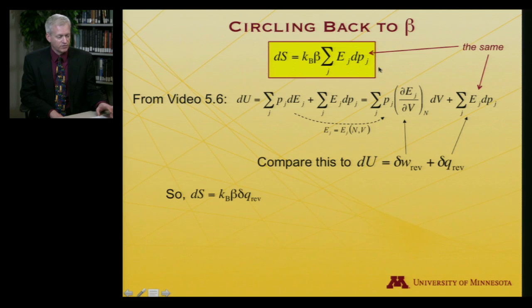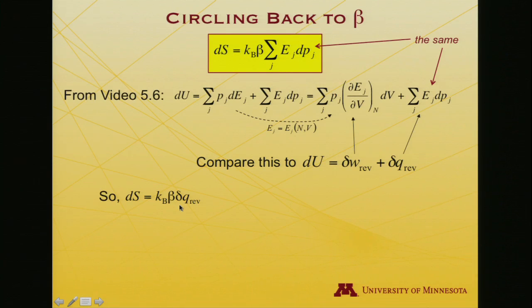So at this stage, if I make this substitution for this sum is del q reversible, I get that ds is equal to Boltzmann's constant times beta times del q reversible.